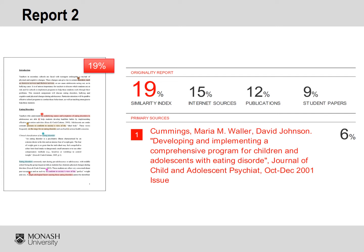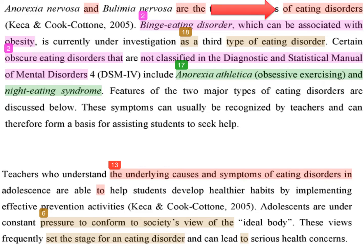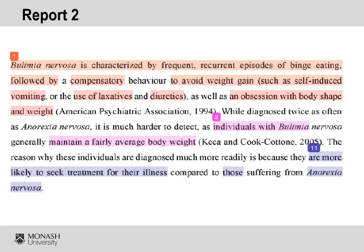6% of this text matching comes from an academic publication, while the rest of the matches are reasonably small. When I examine the text, I can see that common phrases such as 'eating disorders,' technical terms such as 'anorexia nervosa,' and names such as the full name of the DSM-IV have matched. Additionally, common phrases such as 'conformed to society's view of' have matched. I also note that in some sections there are larger chunks of text that matched — these are usually either statistics or lists of common symptoms which cannot really be restated in other words. In each of these cases where large text matching has occurred, the student has clearly referenced their source.